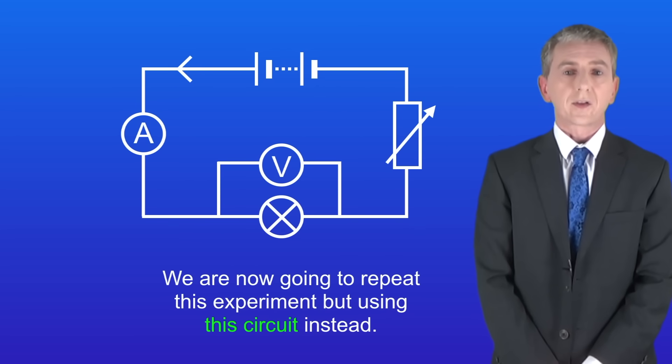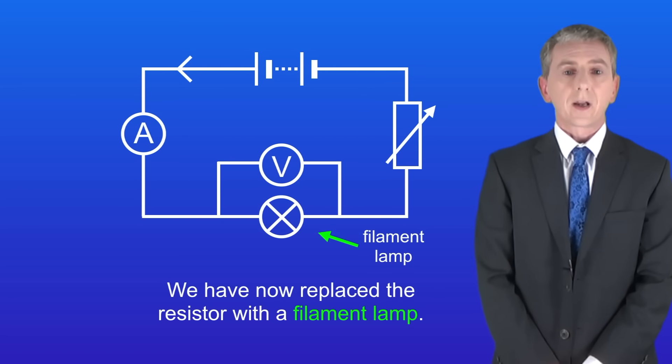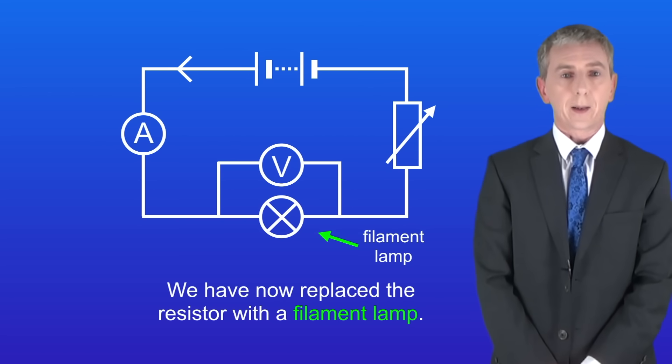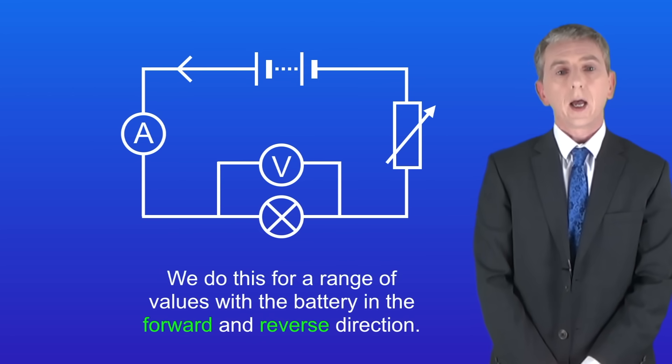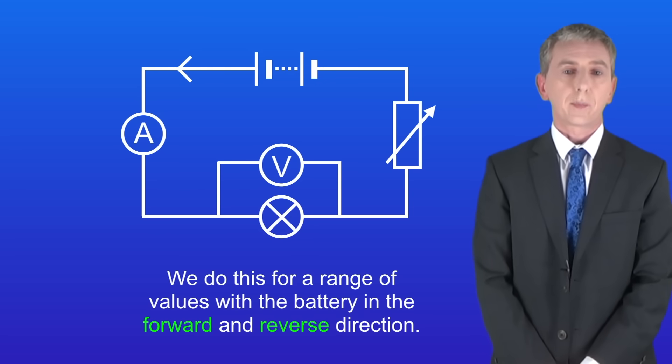Okay, we're now going to repeat this experiment but using this circuit instead. As you can see we've now replaced the resistor with a filament lamp. So just like before we adjust the variable resistor and read both the potential difference and the current. And we do this for a range of values with the battery in the forward and the reverse direction.